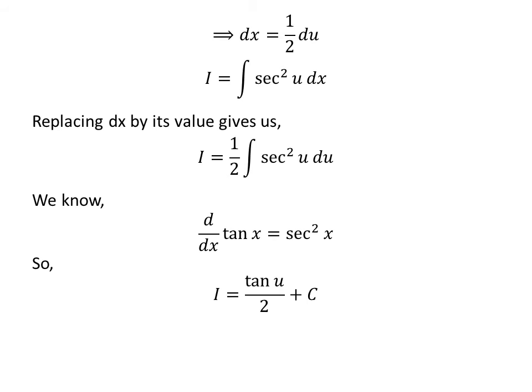So, from the above derivative, we can conclude tan(u) is the anti-derivative of sec²(u). So, I = tan(u)/2 + C. C is the arbitrary constant of indefinite integral. Never forget to add this constant.